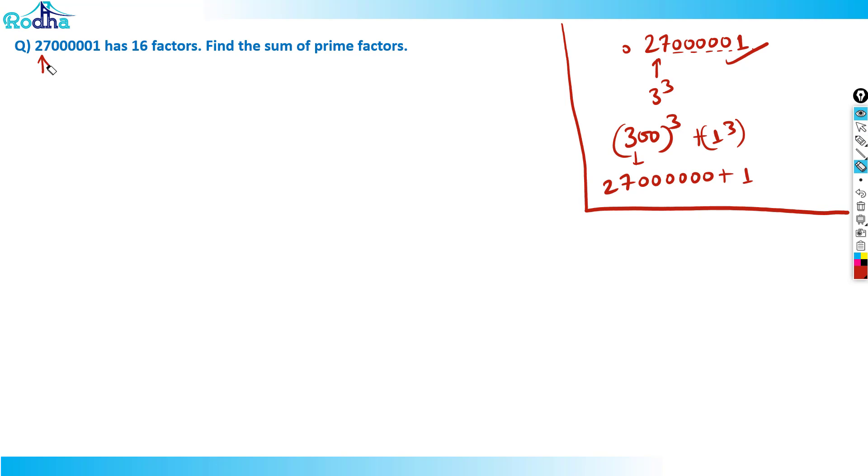So now let's solve it. I can write the whole number as 300 cube plus 1 cube. There's a cube plus b cube form, which equals a plus b into a square minus ab plus b square. Now my a here is 300 and my b here is 1. So 300 plus 1 into 300 square minus 300 into 1 plus 1 square.